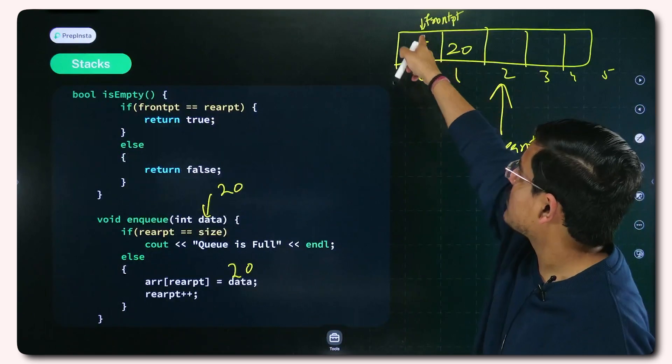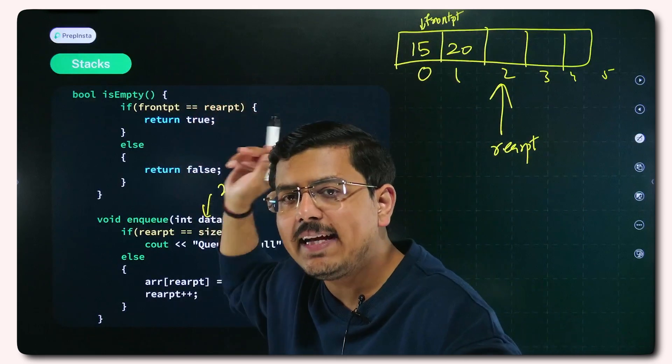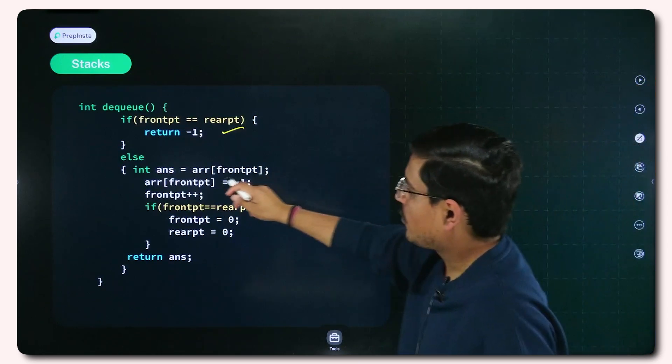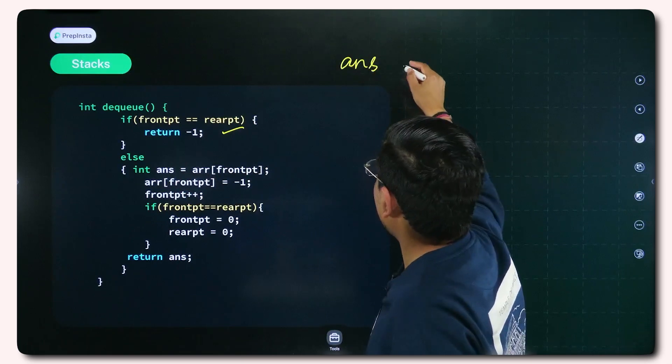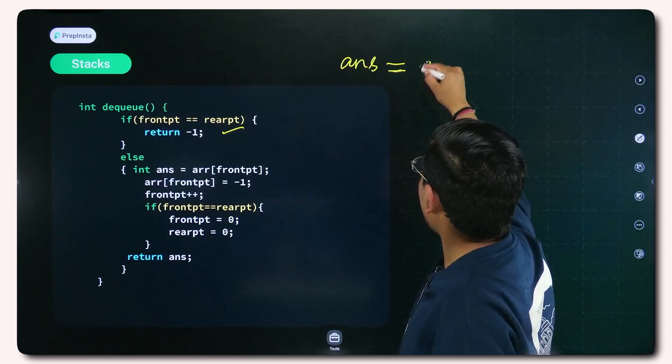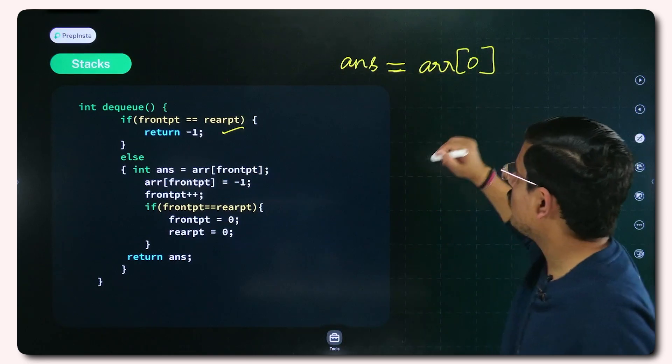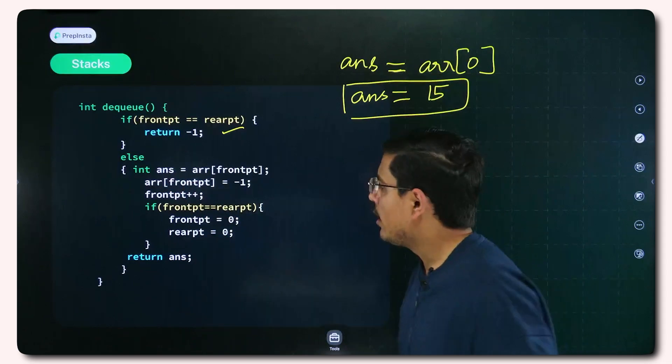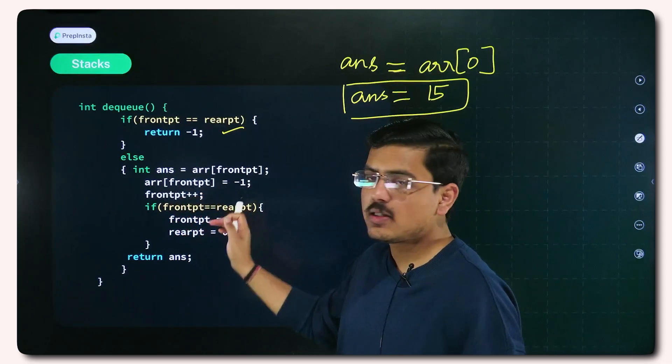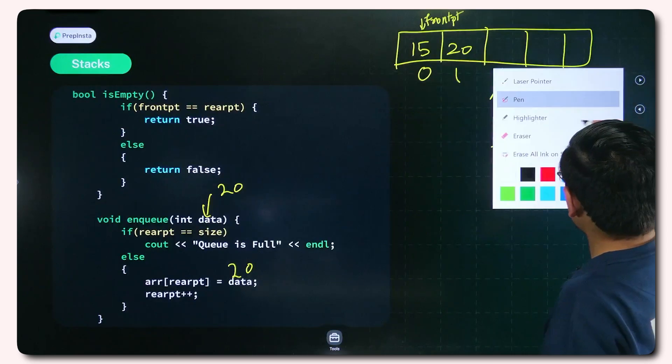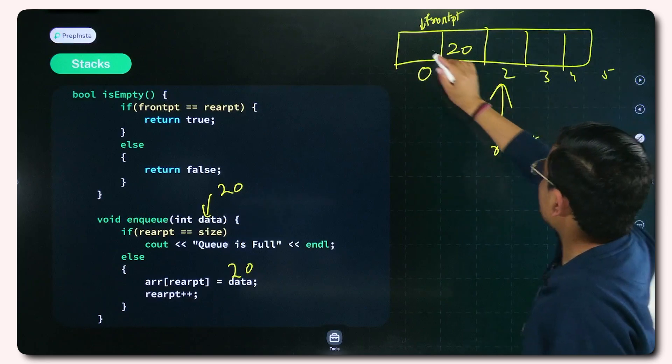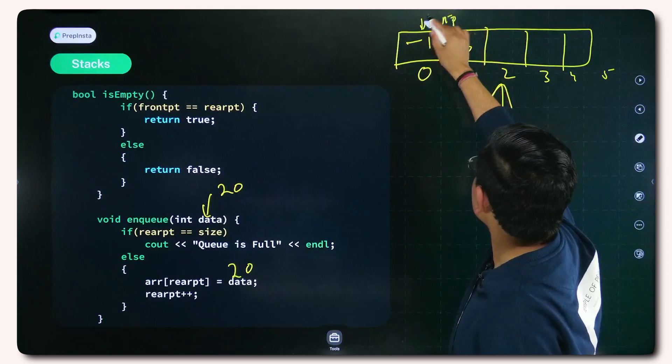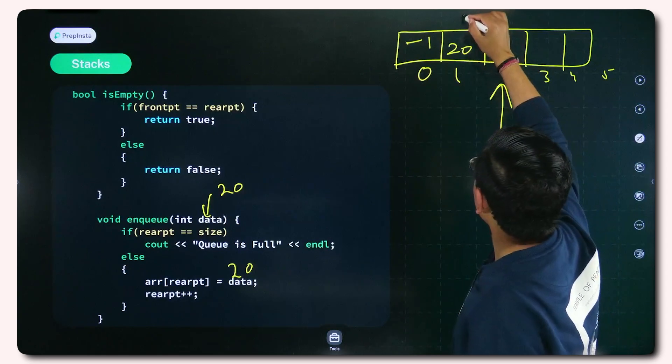If you correctly remember, front is still pointing at 15. So if I dequeue, 15 will get removed first. What are we doing here? We are first of all storing in this answer variable, basically in this integer variable ans, I am storing this array of front PT. Front PT is right now at 0, the value of front PT is 0, so this would be 15. You have 15 stored in this variable. Now you set array of front PT is equal to minus 1. So basically you set this value as minus 1 now and then you increment front PT. This front PT gets incremented.